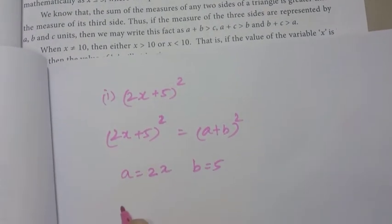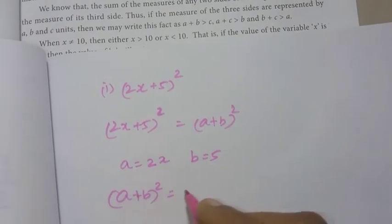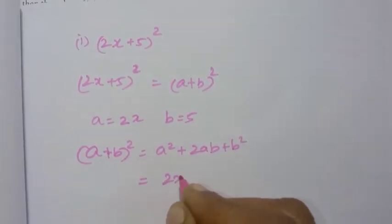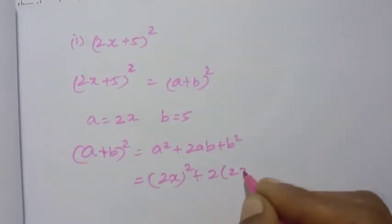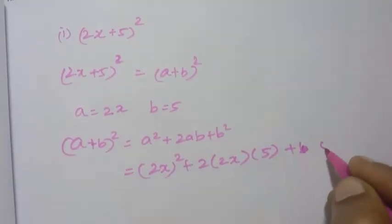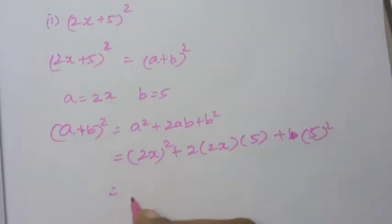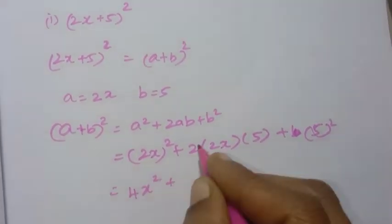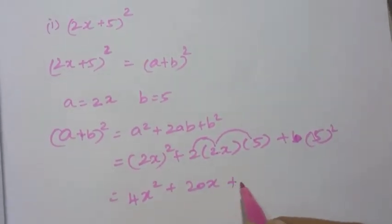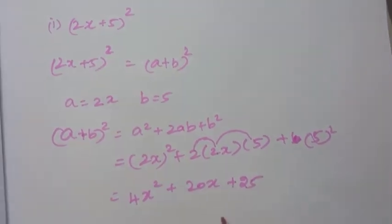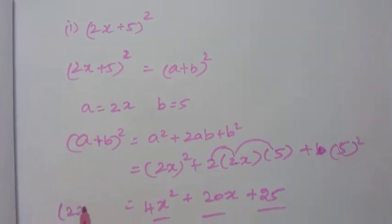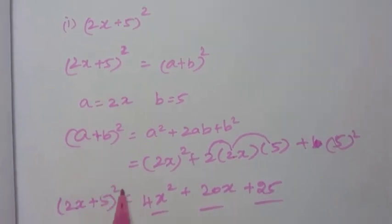The formula is: a plus b, the whole square, is equal to a squared plus 2ab plus b squared. Substituting: 2x the whole square, plus 2 into 2x into 5, plus 5 squared. That gives 4x squared plus 20x plus 25. So (2x + 5)² = 4x² + 20x + 25.